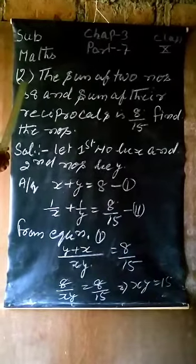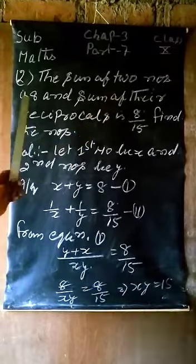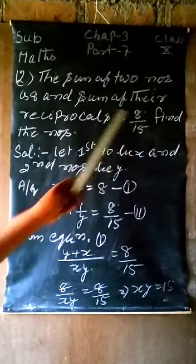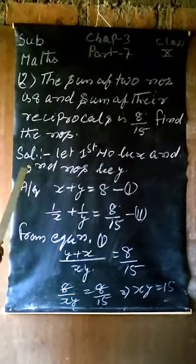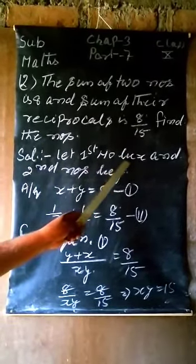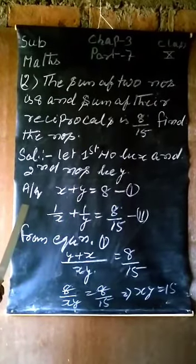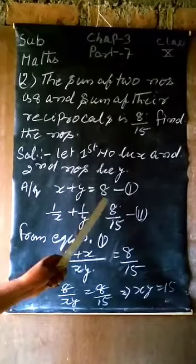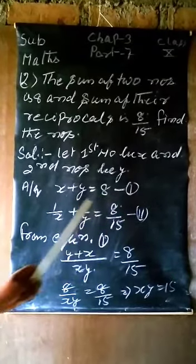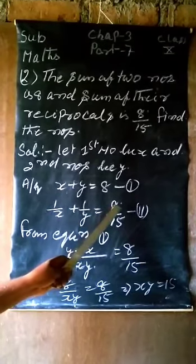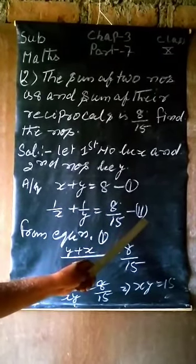Second example: the sum of two numbers is 8 and sum of their reciprocals is 8 by 15. Find the numbers. Solution: let first number be x and second number be y. Then according to question, x plus y equals 8. This is equation first. And 1 by x plus 1 by y equals 8 by 15. This is equation second.